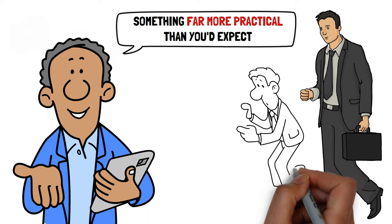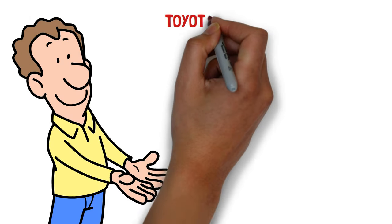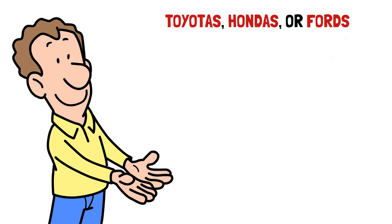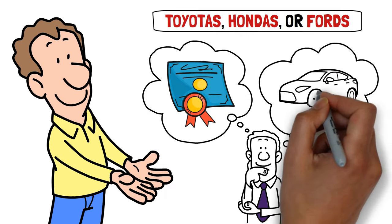And according to an Experian automotive survey, they are. Most millionaires are hitting the road in Toyotas, Hondas, or Fords. Yeah, you heard it right. Forget the luxury badges. These high net worth folks are all about practical wheels.